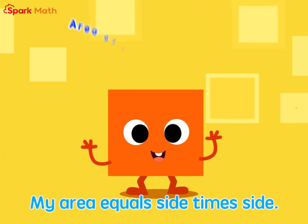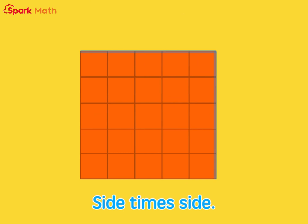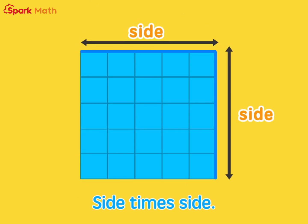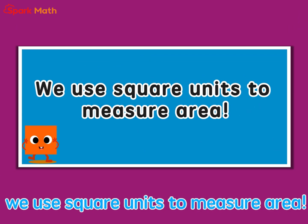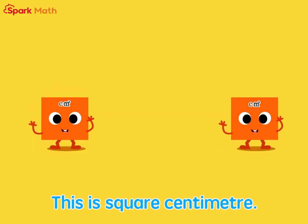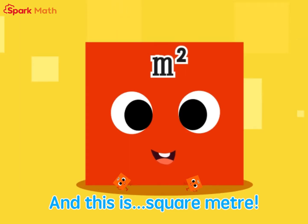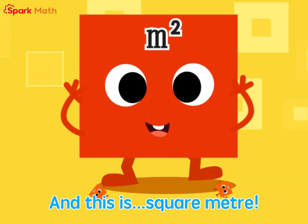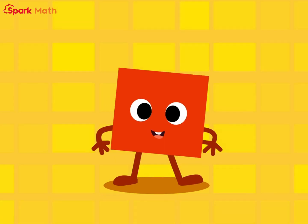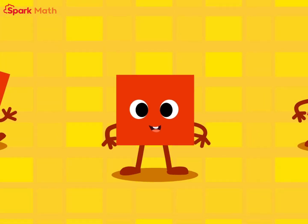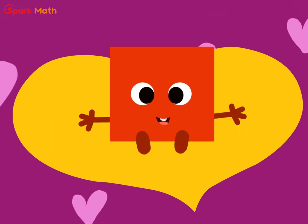And square — how can we find my area? My area equals side times side. We use square units to measure area. This is square centimeter and this is square meter.